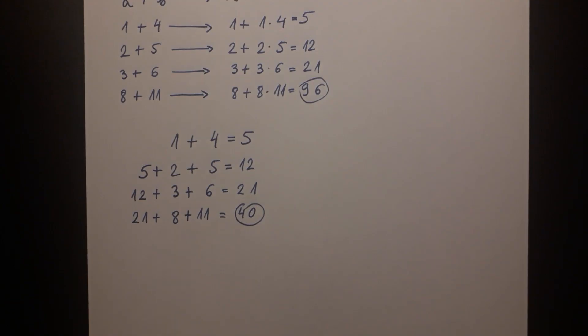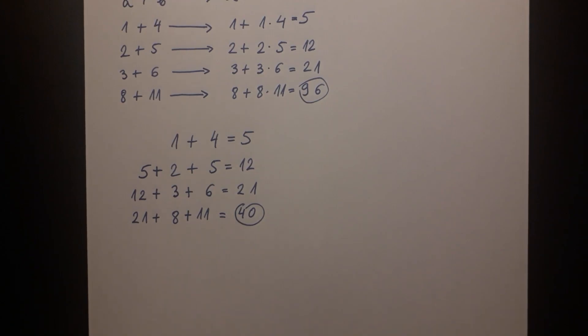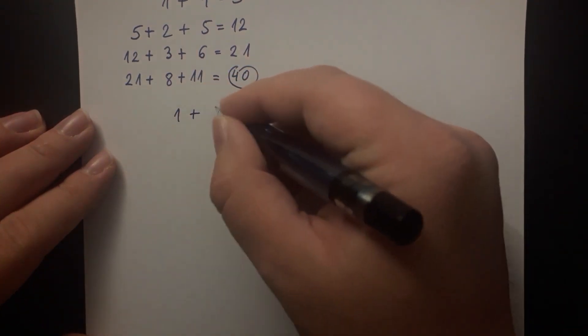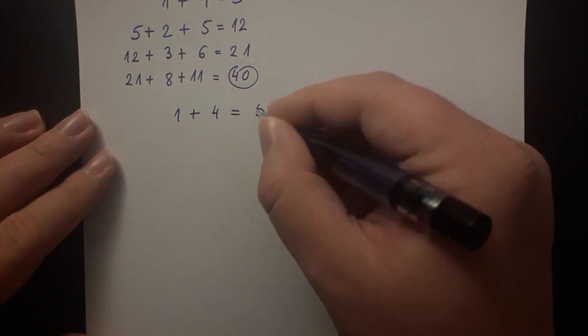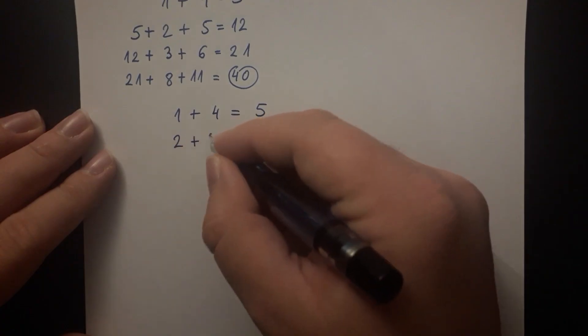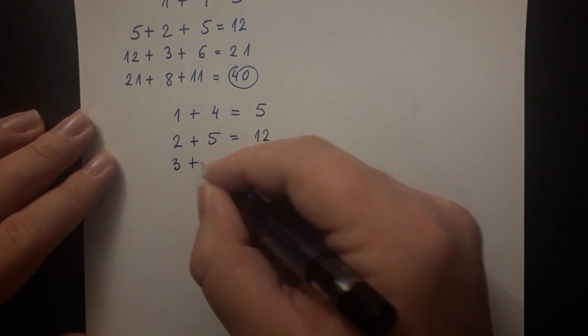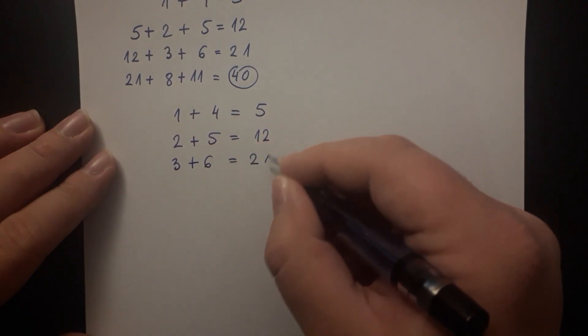This is how that is possible. So when we have this running total of the different numbers in each line we are given the equations 1 plus 4 which is equal to 5, 2 plus 5 which is equal to 12, 3 plus 6 which is equal to 21.